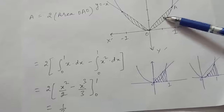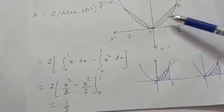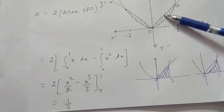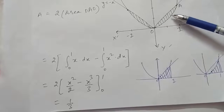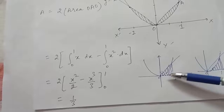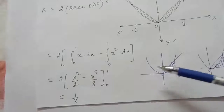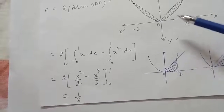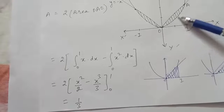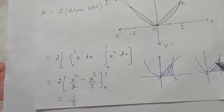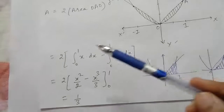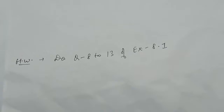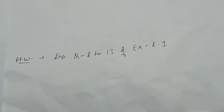Integral of x is x²/2, minus integral of x² which is x³/3, with limits from 0 to 1. Putting the limits gives the answer as 1/3. So to find the area between a curve and a line: find the area of whichever lies above (here the line lies above the parabola) with the x-axis, subtract the area of the one that lies below (the parabola). Today's homework is questions 8 to 13 of Exercise 8.1.